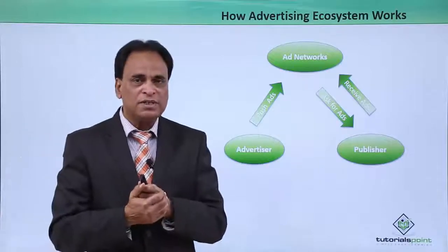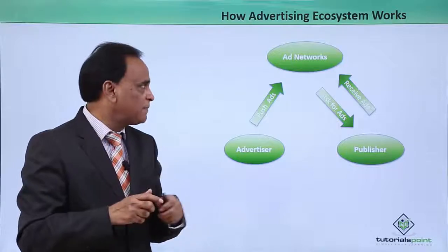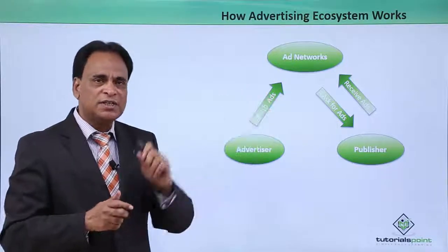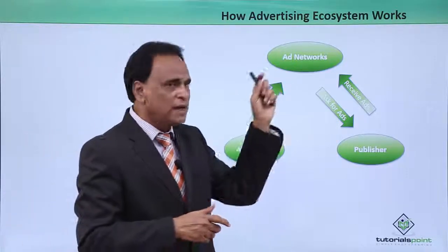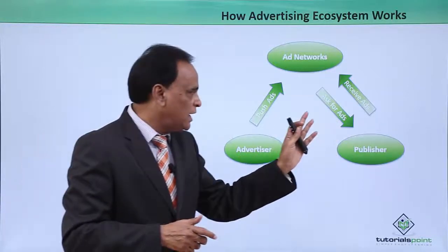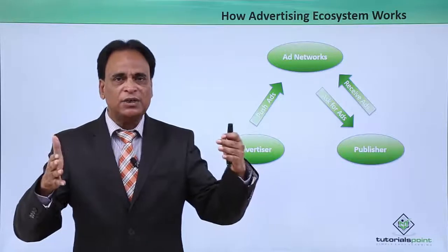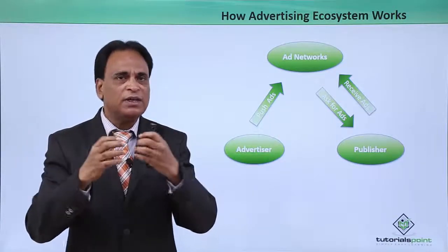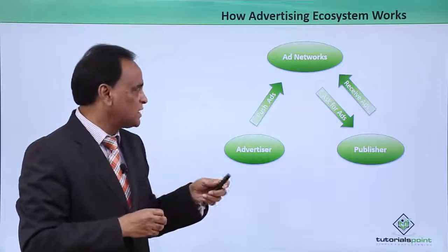How does the ecosystem of mobile advertising work? There are three players in this ecosystem. One is called the ad network, the second is called the advertiser, and the third is the publisher. The integration between these three is what the ecosystem of advertising on mobile is concerned with.